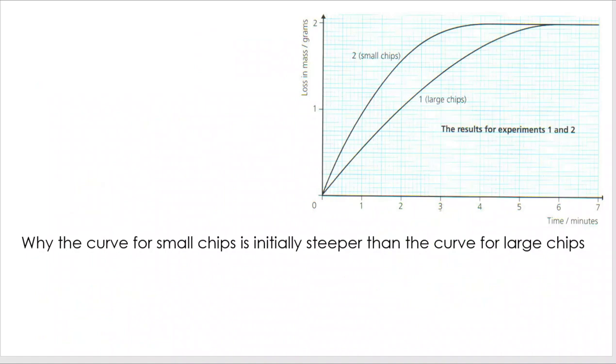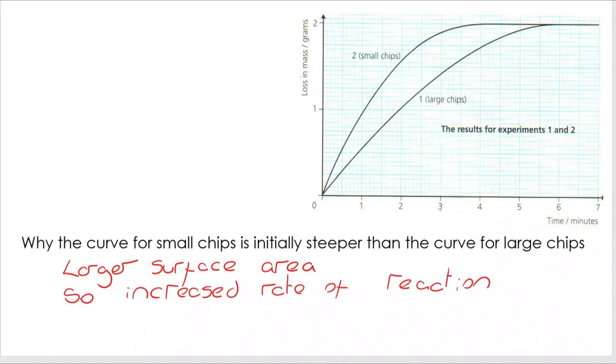In terms of this graph, there are a few questions that are going to come up. Have a go at each one. Now, the curve for small chips is initially steeper than the curve for large chips. Why is that the case? And what we're looking at here is that smaller chips have a larger surface area. And if they've got a larger surface area, that means there will be an increased rate of reaction, as we've discussed earlier in this video.